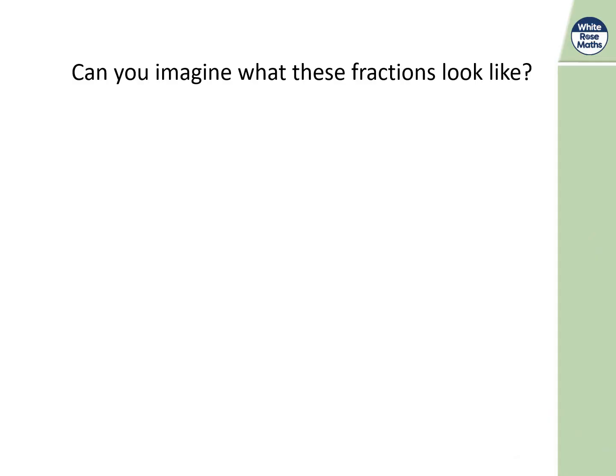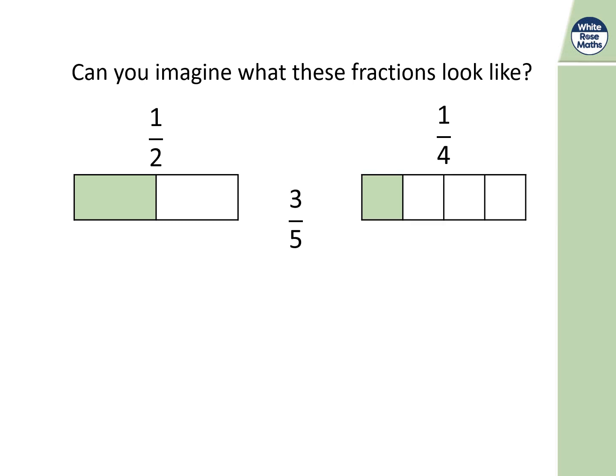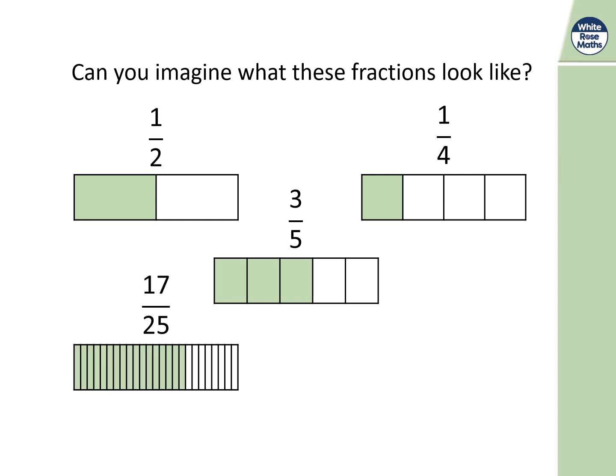Now, can you imagine what these fractions look like? A half is one out of two parts. A quarter is one out of four. Three fifths means split into fifths with three bars filled in. Seventeen twenty-fifths would look like 25 little squares with 17 filled in. The numerator is how much you're taking, and the denominator is the total number of parts. Twelve forty-eighths actually simplifies to a quarter by dividing top and bottom by 12.